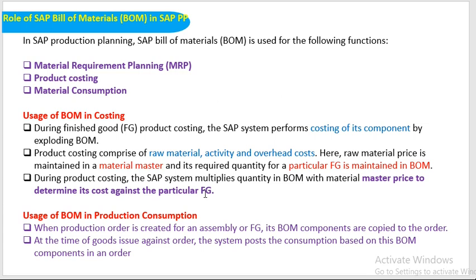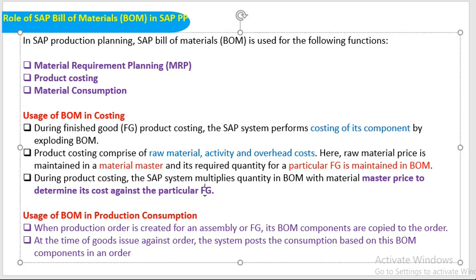To determine the finished goods cost: first, we need to maintain quantity in the BOM, and second, we need to maintain price in the material master. The system multiplies quantity in the BOM with the material master price and you get the finished goods price.